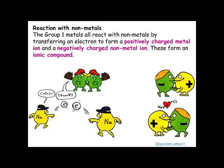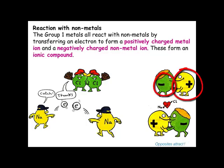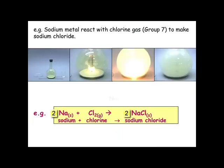Group 1 metals will react with Group 7 elements very readily. The reason is that Group 1 metals will lose an electron to gain a full outer shell, and Group 7 elements will gain an electron to get a full outer shell. So sodium metal will lose an electron to become Na⁺, the sodium ion, and chlorine will gain an electron to become Cl⁻, the chloride ion. There is a very vigorous reaction between sodium metal and chlorine gas, producing a lot of heat and light.